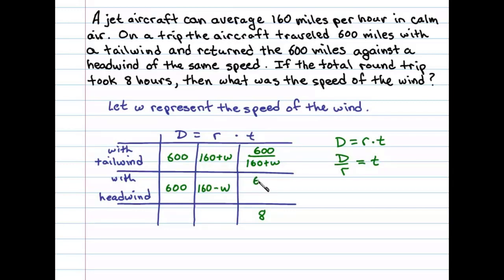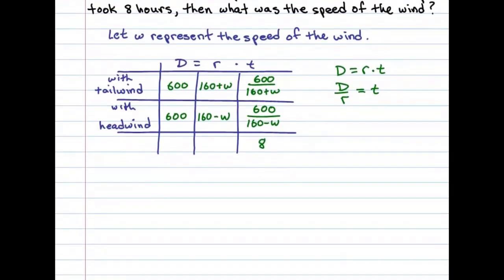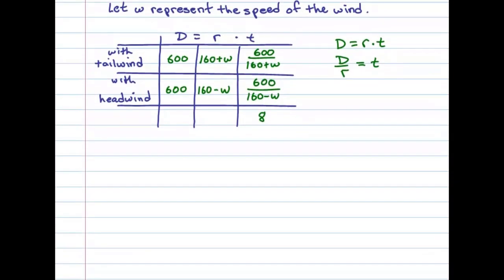Similarly, we can say 600 divided by 160 minus W will be the time spent traveling with a headwind. It's this time column that defines our setup. Here we have the time traveling with the tailwind plus the time traveling with the headwind is equal to a total of 8 hours. And this is our setup.